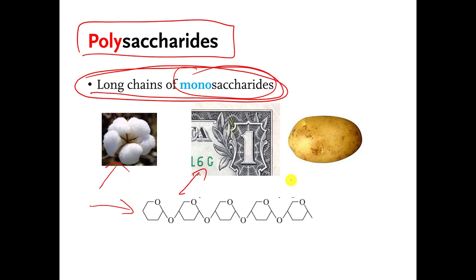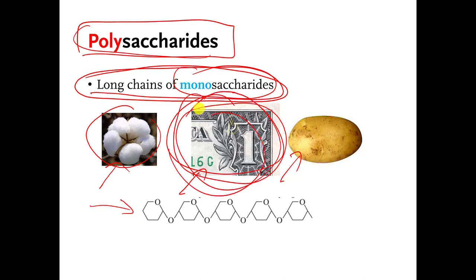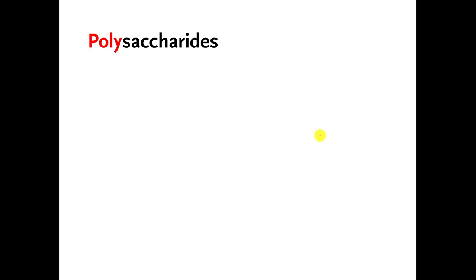These things are largely made of polysaccharides, so cotton. The money that US paper bills are printed on is cotton, although I think they're probably going to go to plastic at some point. Stuff in potatoes is mostly polysaccharide. There is not a whole lot that I'm going to expect you to know about polysaccharides, just a couple of things.